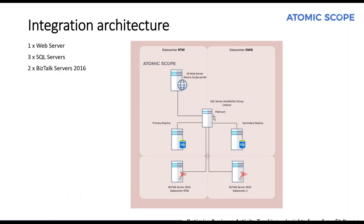The integration architecture: before diving into the functional and technical implementation of AtomScope, I want to show you our architecture with the implementation of AtomScope in our production environment. We have in place across two data centers one web server hosting the AtomScope portal, three SQL servers in a cluster for the data layer — also divided across the data centers — and two BizTalk Server 2016 instances running as single nodes, load balanced through an F5 load balancer to keep the integration platform highly available.